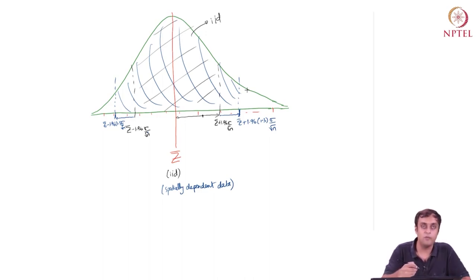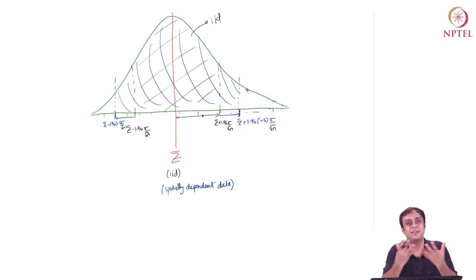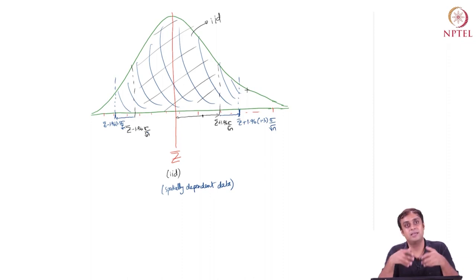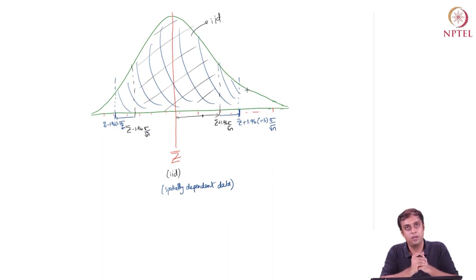We are now going to move on to a two-dimensional case and study spatial dependence and its consequences on the mean estimator as a next step.